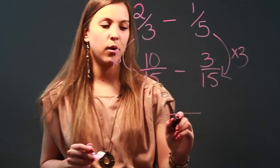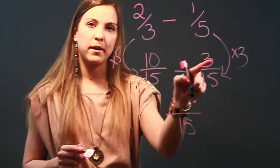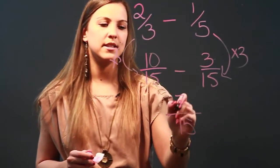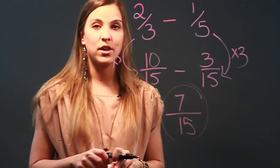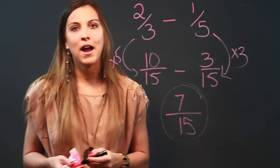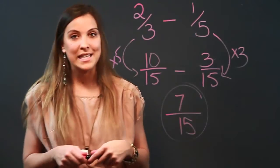The denominator is the same, so I go ahead and keep it and I subtract my numerators. 10 minus 3 is 7, and so my answer is 7 over 15. And that is how you add and subtract fractions that have different bottoms or denominators.